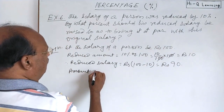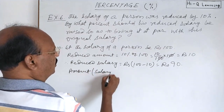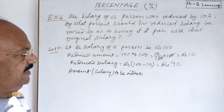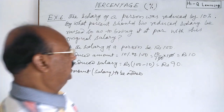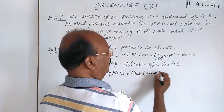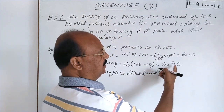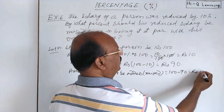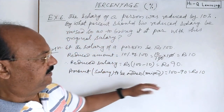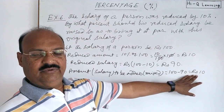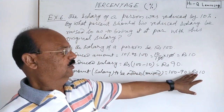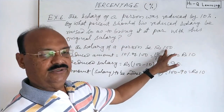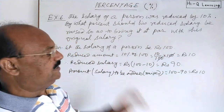The amount to be added, or to be raised, is: the salary has become 90 and it should be equal to 100, so 100 minus 90 is equal to rupees 10. We have to raise the salary by rupees 10 so that it becomes 90 plus 10, which equals 100, equal to the original salary. Now we have to calculate the percentage of this amount.